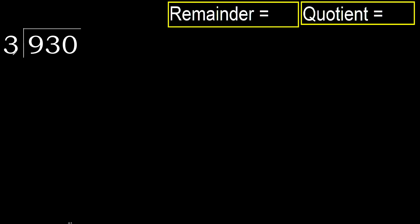930 divided by 3. 9 is not less, therefore with 9. 3 multiplied by which number is nearest to 9, but not greater? 3 multiplied by 4 — 12 is greater. 3 multiplied by 3 — 9 is not greater.